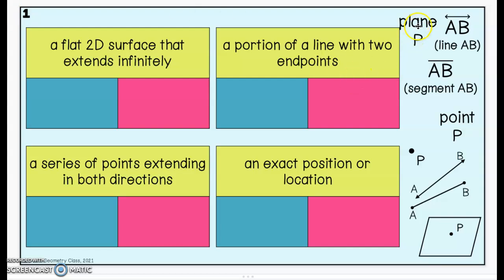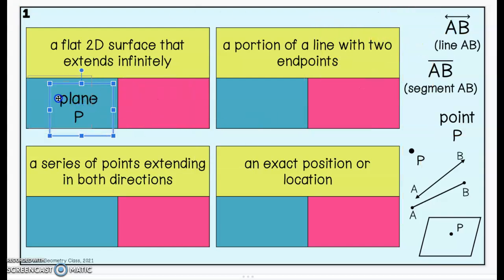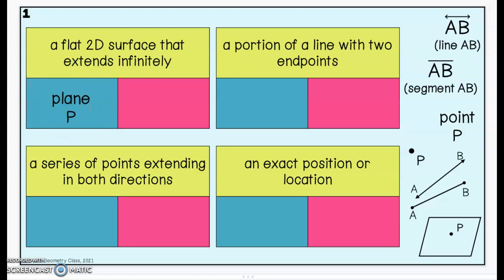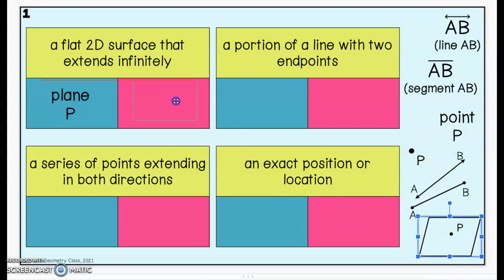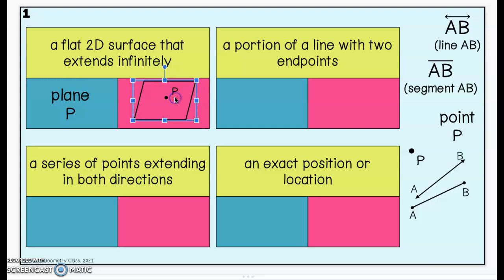— that is called a plane. So a flat 2D surface that extends infinitely, that means forever, is called a plane. So plane P — we've matched our notation here, and now we need to find a picture that goes with it. This would be the image for plane P because it is a flat 2D surface that extends infinitely, so it's going to keep going forever and ever.